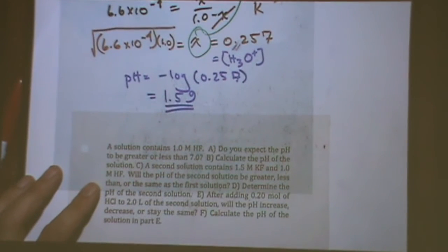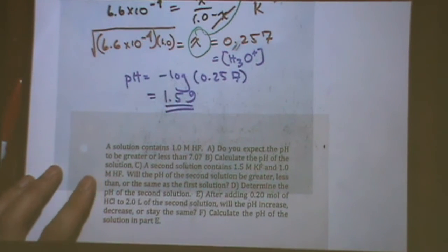Part C, a second solution contains 1.5 molar KF. So if I add now KF, do I expect the second solution to have a greater, equal, or less than the pH of the first? It would be greater. Yeah. Question.